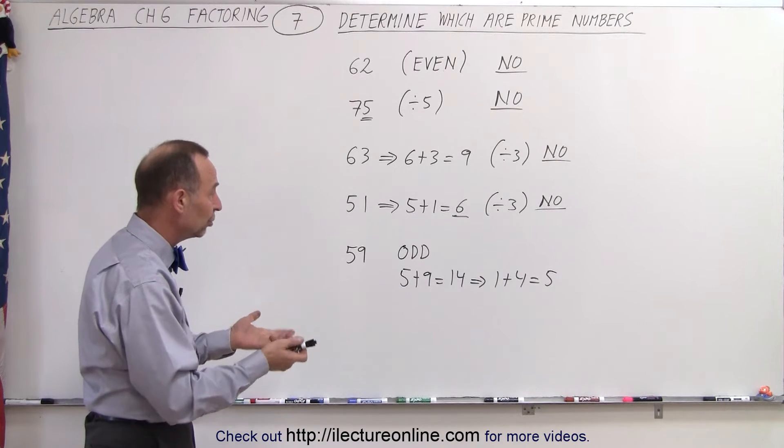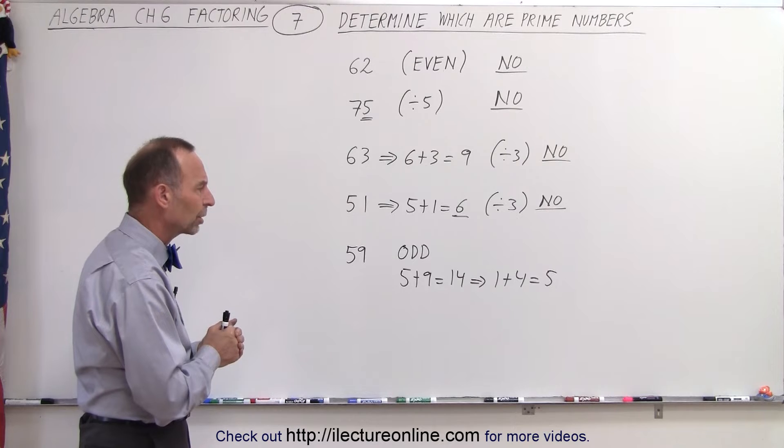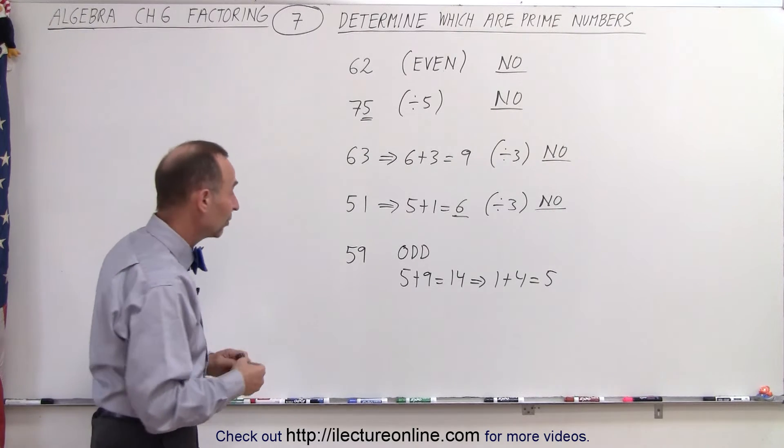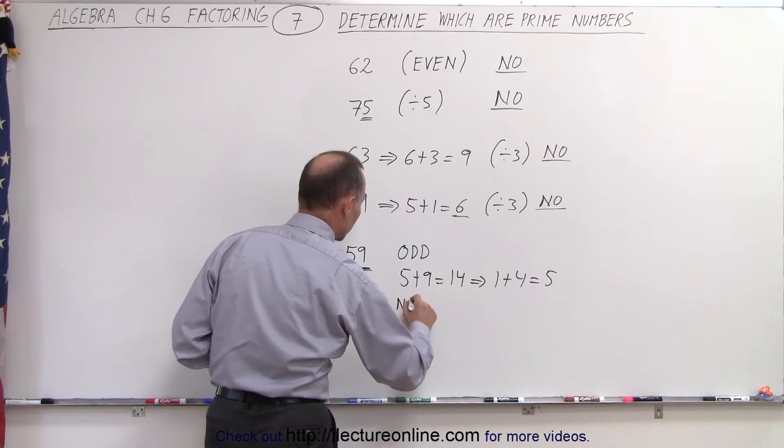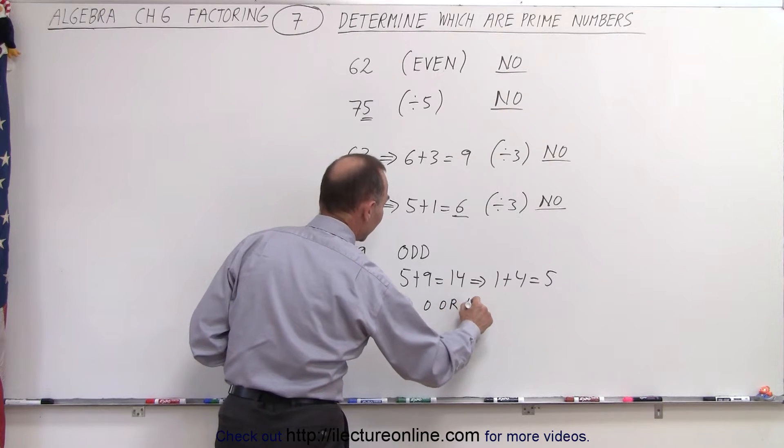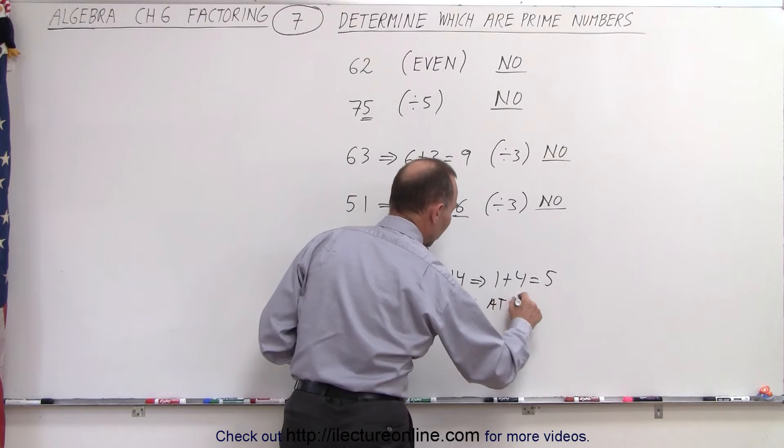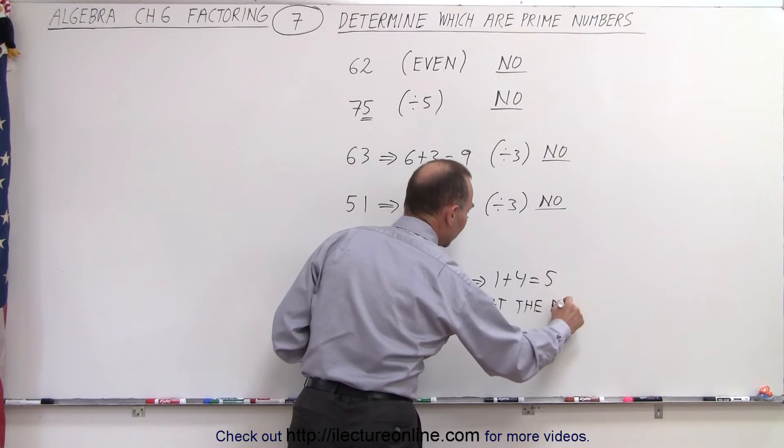Now we've already tried dividing by 2, dividing by 3, doesn't work. How about dividing by 5? Doesn't work, because it doesn't end in a 0 or 5, so no 0 or 5 at the end. So it's still a possible candidate.